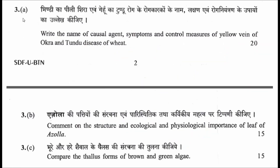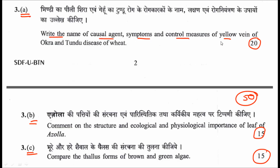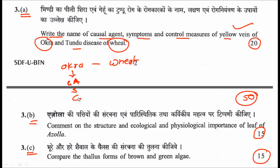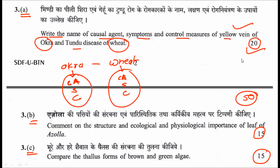Question three is divided into three sub-sections — A, B, and C — carrying 20, 15, and 15 marks respectively. The first sub-question asks for the causal agent, symptoms, and control measures of yellow vein disease of okra and tikka disease of wheat. You must address both diseases separately — causal agent, symptoms, and control for each. Providing both accurately will earn the full 20 marks, and this question comes from plant pathology.